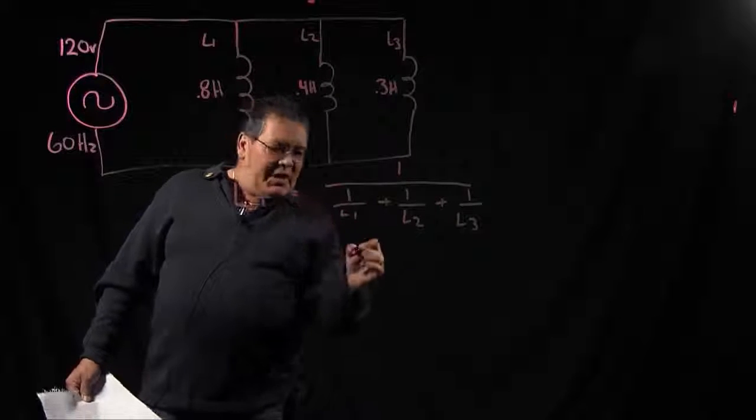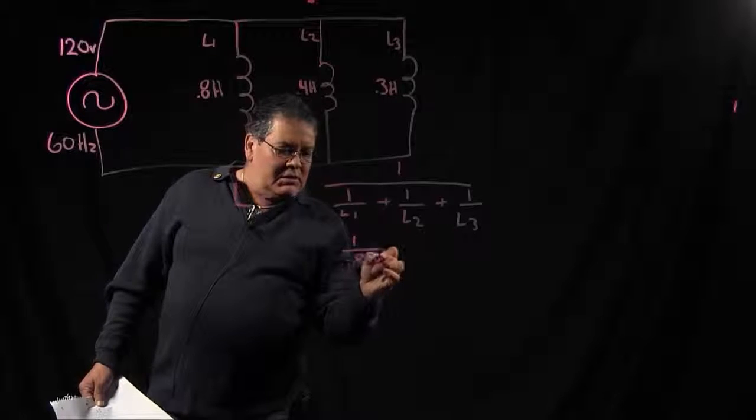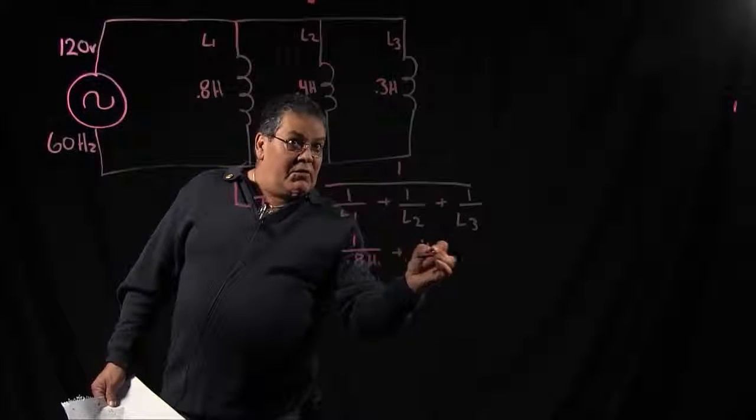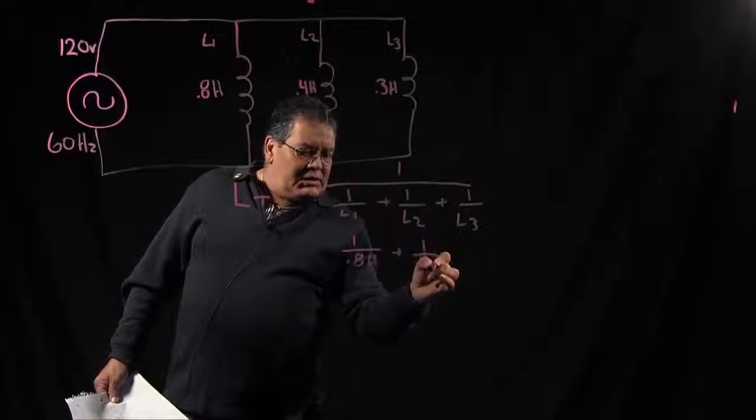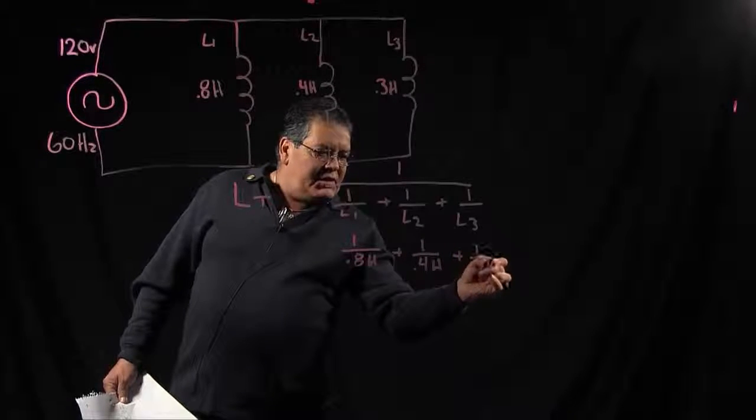So basically you are just going to plug in the values: 1 over 0.8 henries plus 1 over 0.4 henries plus 1 over 0.3 henries.